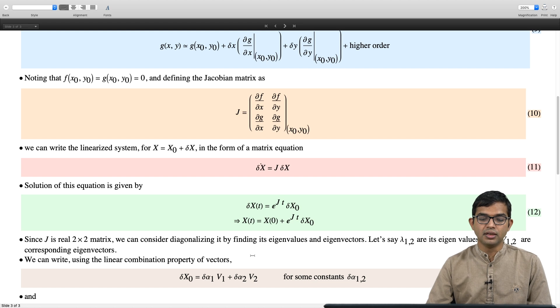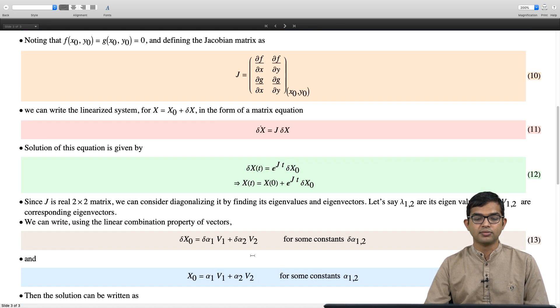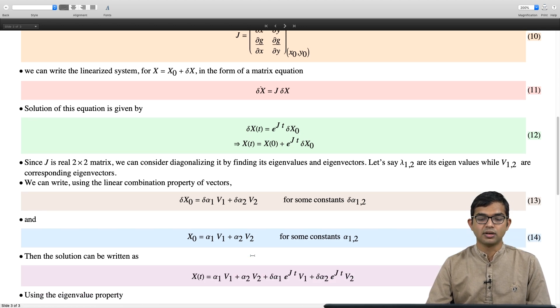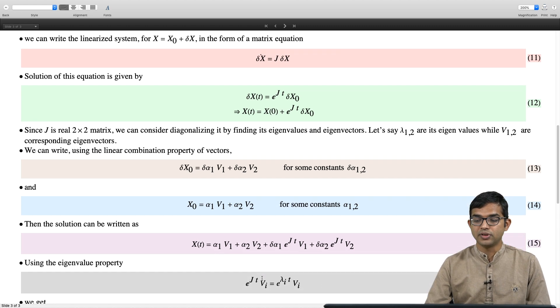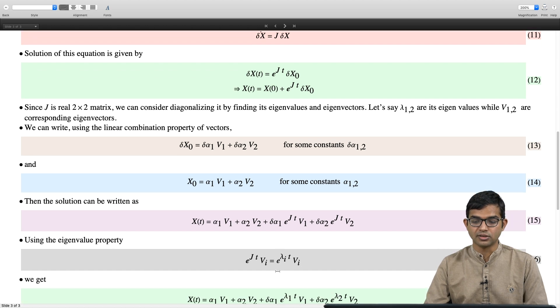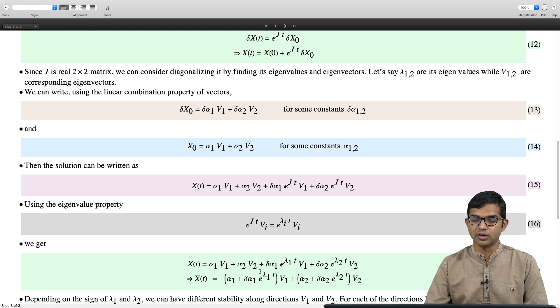We can write using the linear combination property of vectors, if v1 and v2 are the Eigen vectors of your Jacobian matrix, you can write down the solution x of t as, first of all you write your initial conditions and expand it in terms of the Eigen vectors of your Jacobian matrix. The full solution comes out to be alpha 1 v1 plus alpha 2 v2 plus delta alpha 1 e to the j t v1 plus delta alpha 2 e to the j t v2. Then the crucial point comes in here now. e to the j t times v1 is a very simple object. It is just going to be a phase times that vector itself, because we have considered Eigen vectors of j. e to the j t acting upon an Eigen vector will just give you e to the lambda i t times that particular Eigen vector. Then your final solution simplifies a great deal.